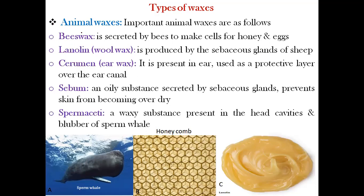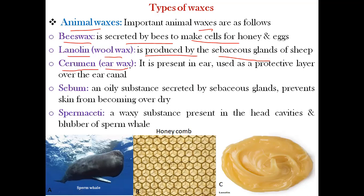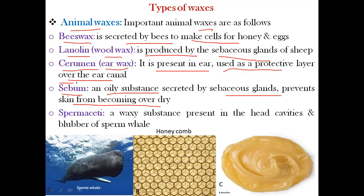There are some important types of waxes. Animal waxes include: bee wax, secreted by bees to make cells for honey and eggs; lanolin or wool wax, produced by the sebaceous glands of sheep; cerumen, also known as ear wax, which is a protective layer over the ear canal; and sebum, an oily substance secreted by sebaceous glands that prevents skin from becoming overly dry.